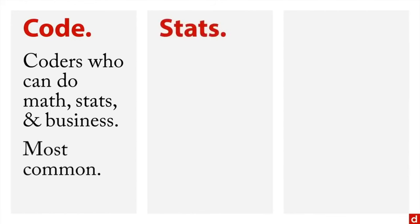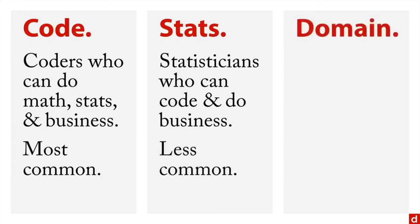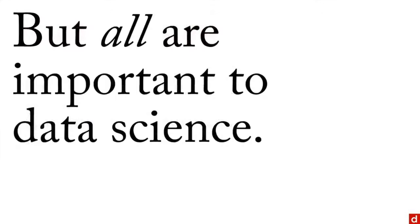On the other hand, there's also stats or statistics. And you can get statisticians who can code and who also can do business. That's less common, but it does happen. And finally, there's people who come into data science from a particular domain. These are, for instance, business people who can code and do numbers, and they're the least common. But all of these are important to data science.